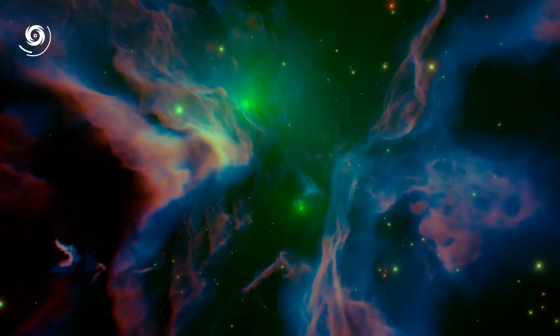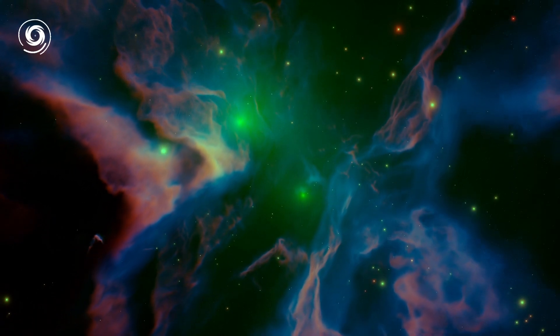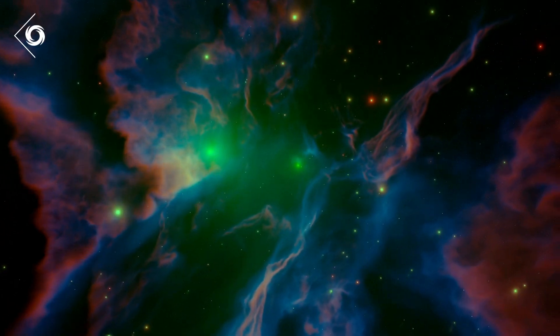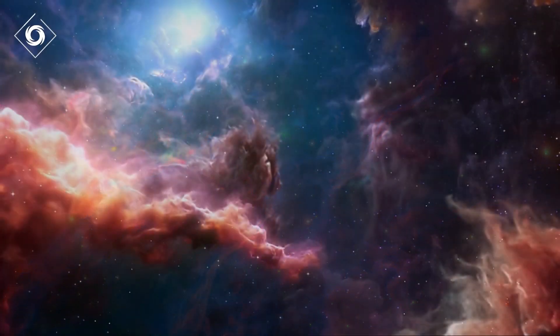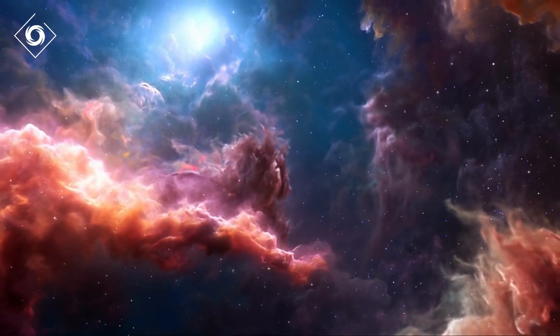So where do black holes come from? When a star burns through its fuel, it may collapse or fall into itself. Smaller stars, about three times the mass of the Sun, will transform into neutron stars or white dwarfs.